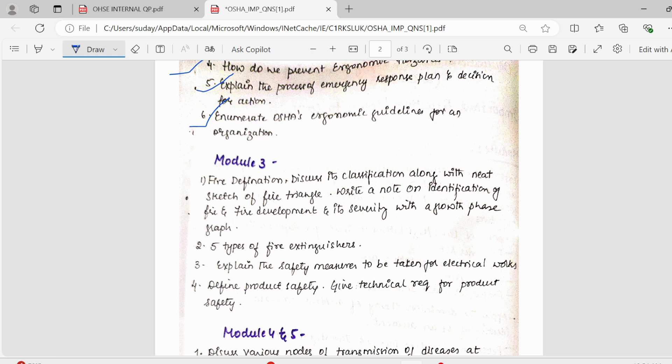Moving on to the third module. First, standard question is about fires. They can ask the definition of fires, classification of fires with a diagram and fire triangle diagram they can ask. Then, write a note on identification of fire and fire development and its severity with a growth phase graph. You have to draw and label it. This was asked for 10 marks in internal. Make sure you study this thoroughly.